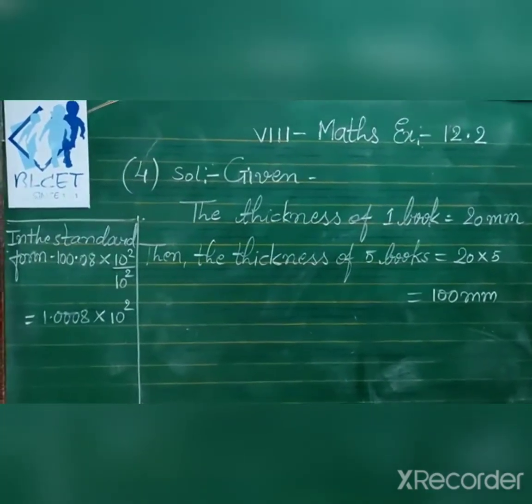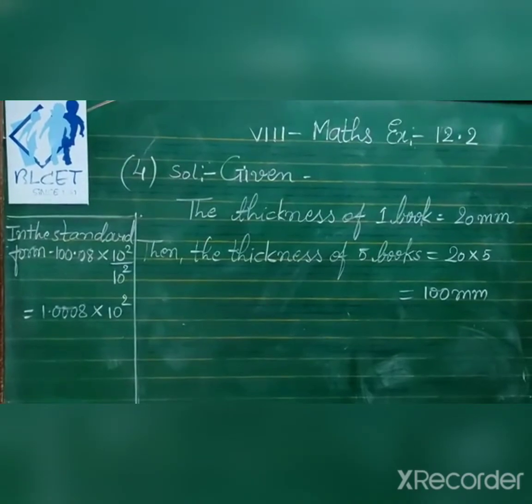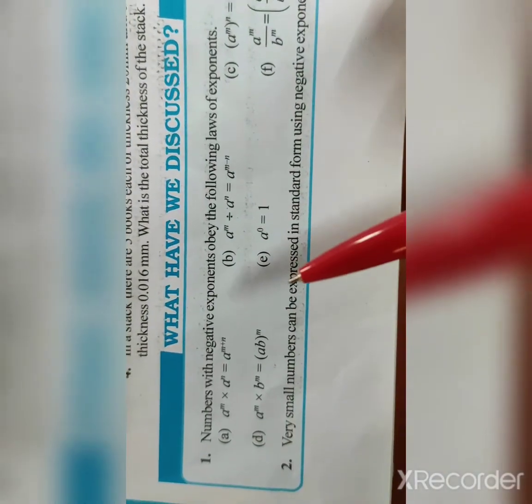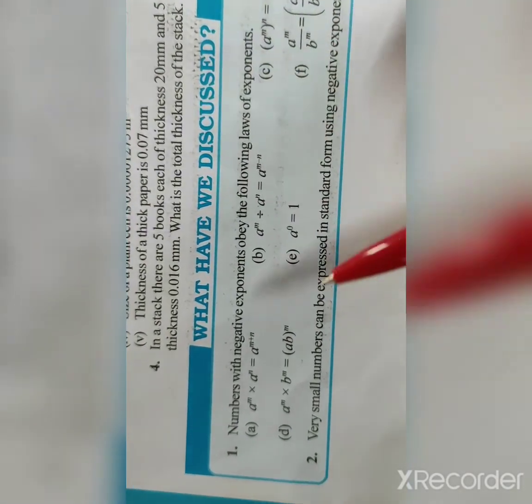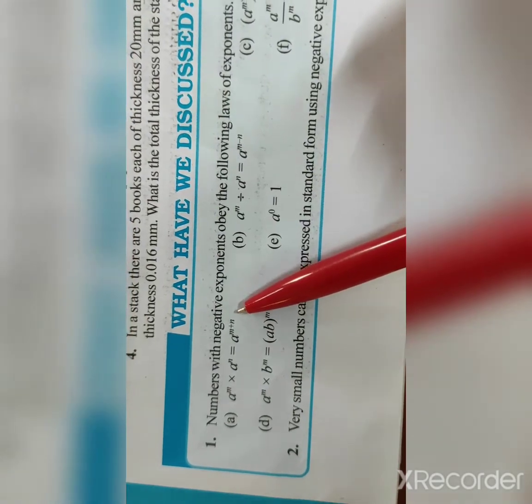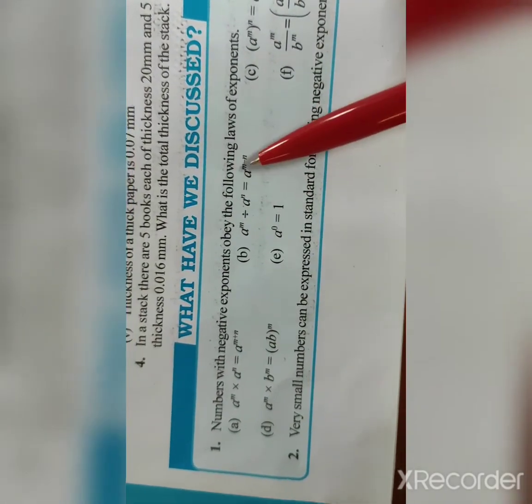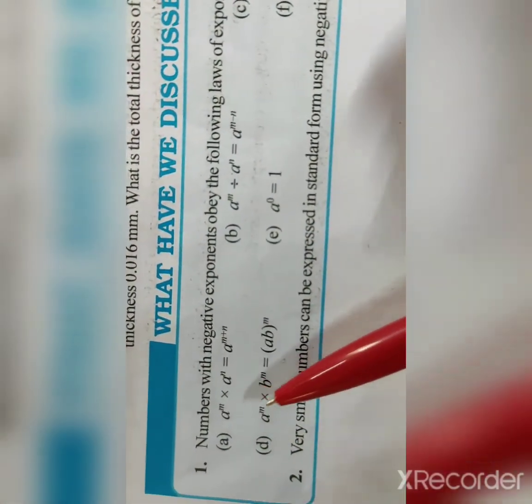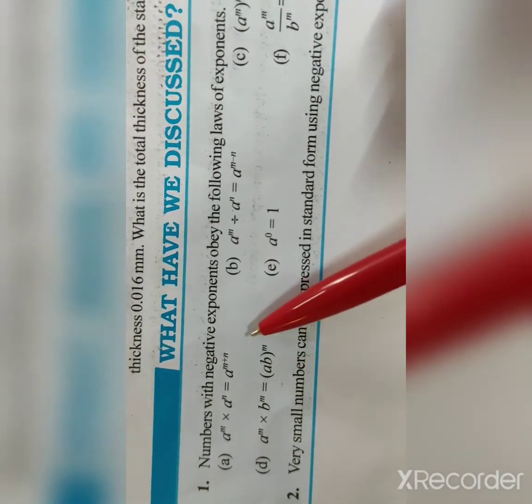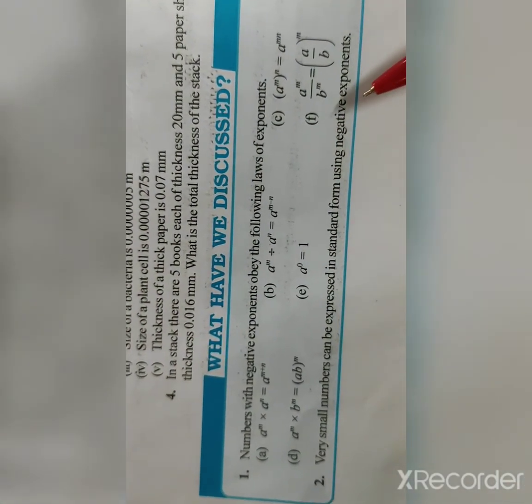Chapter 12 is now complete. Summary of what we discussed: numbers with negative exponents follow these laws — a to the power m times a to the power n = a to the power m plus n; a to the power m divided by a to the power n = a to the power m minus n; (a to the power m) to the power n = a to the power mn; a to the power m times b to the power m = (ab) to the power m; a to the power 0 = 1; (a/b) to the power m = a to the power m upon b to the power m. Very small numbers can be expressed in standard form using negative exponents.